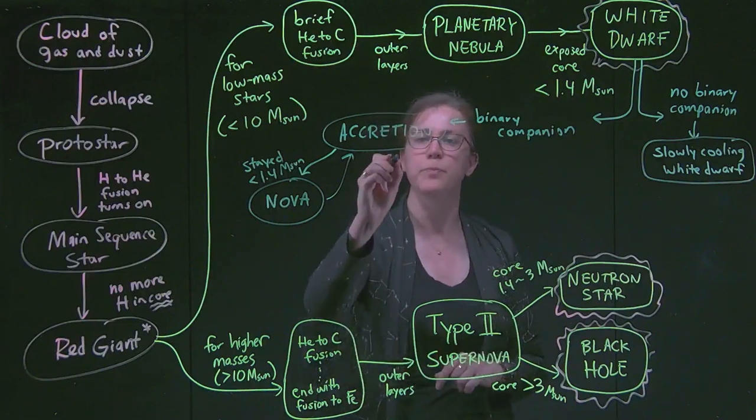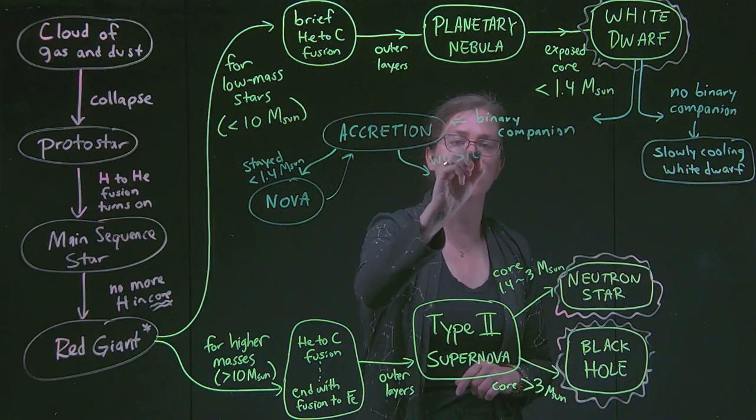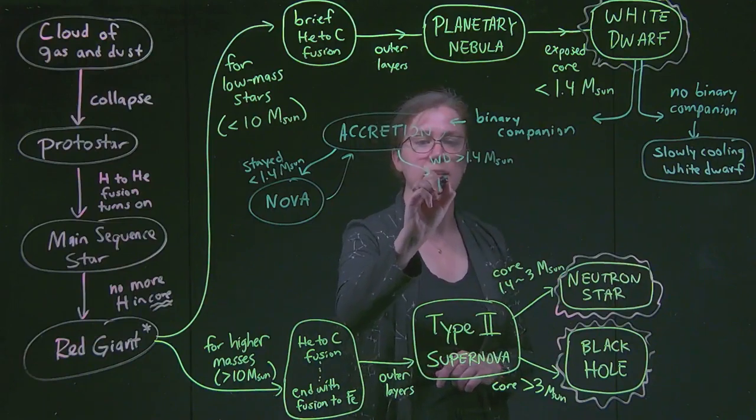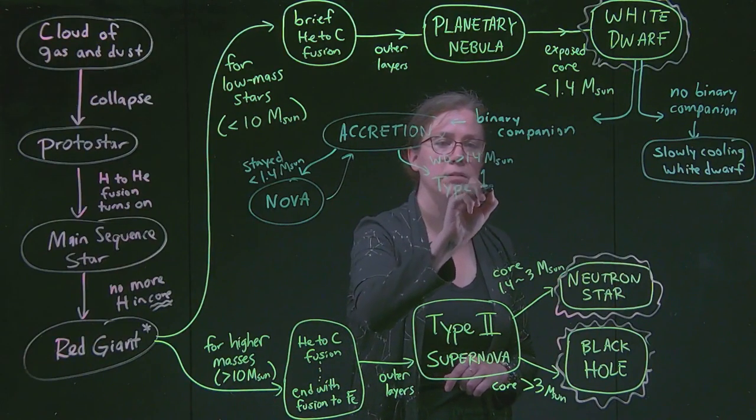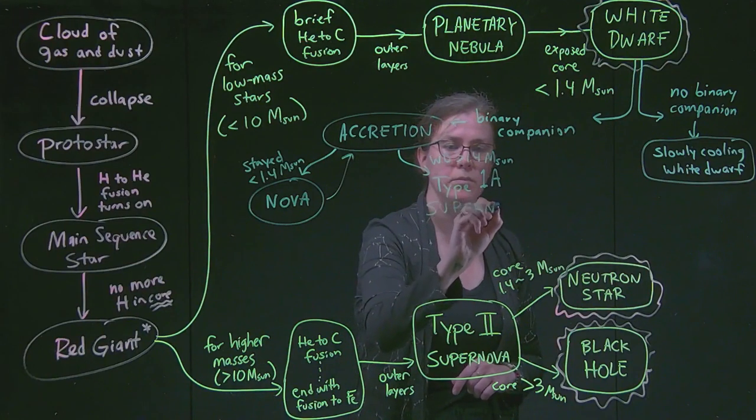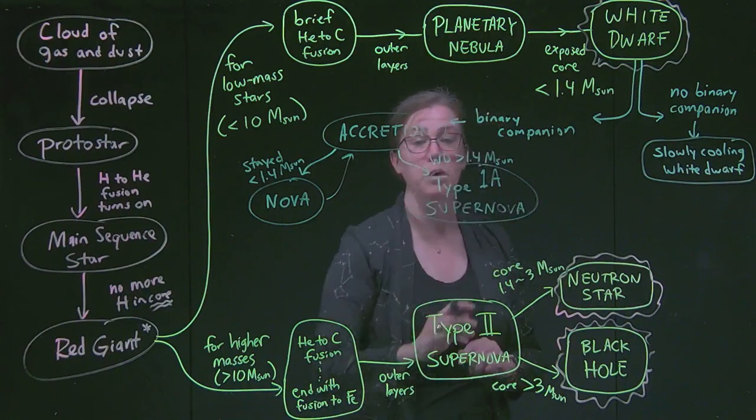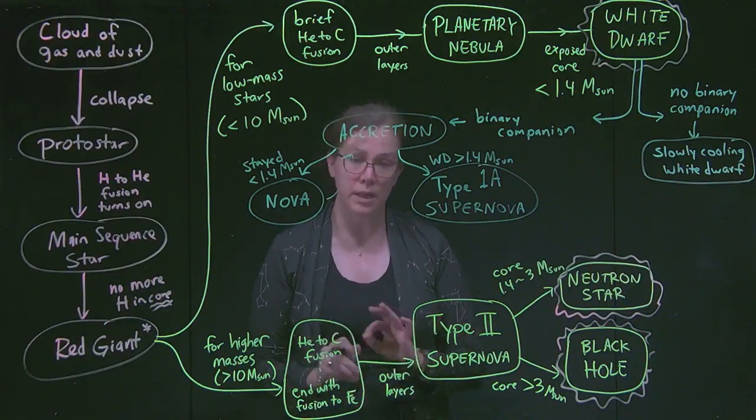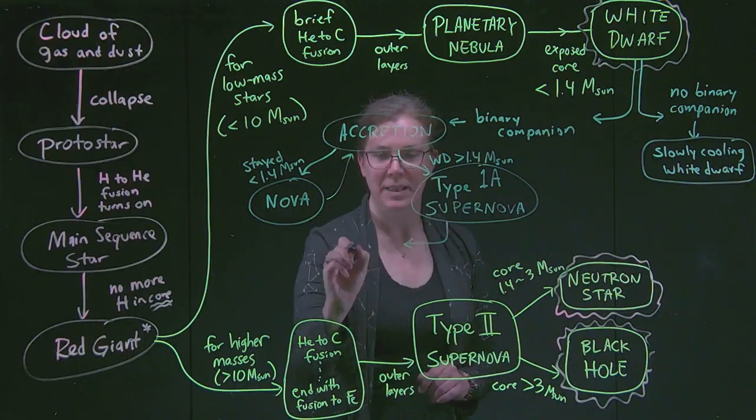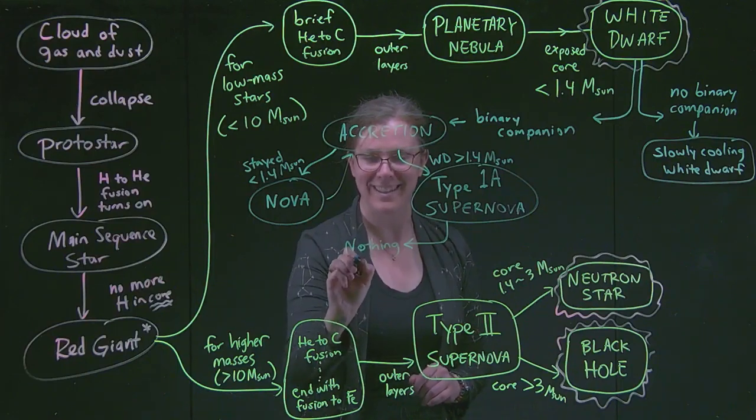Or if the white dwarf surpasses this 1.4 solar mass limit, then we can get a type 1a supernova. And that type 1a supernova will completely destroy the star. And there will be nothing left. So the white dwarf itself is completely destroyed.